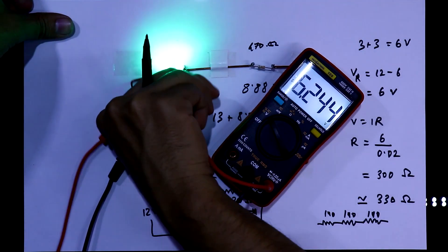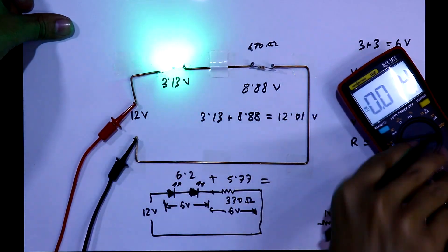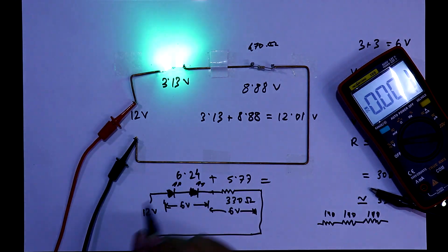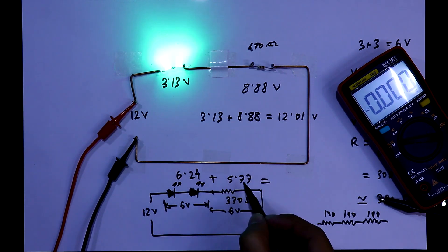In this video, we are going to see how to use a resistor as a current limiter and we will calculate the value of the resistor. So let's get started.